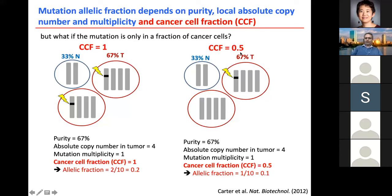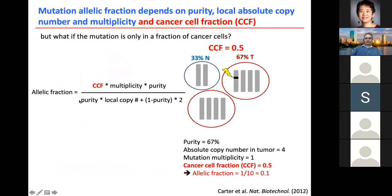What if the mutation is only in part of the cells — say, half of them? Now only one allele out of ten has the mutation, giving a 10% allele fraction. The actual formula includes the CCF (cancer cell fraction). To calculate the expected allele fraction of a mutation, you take the CCF times the multiplicity times the purity, divided by the same denominator, to get the expected allele fraction.